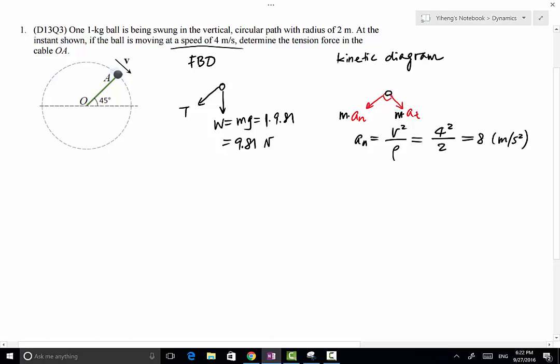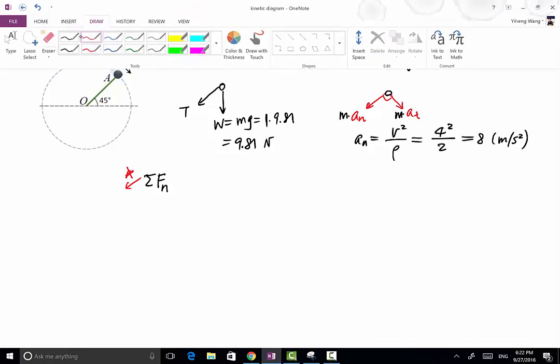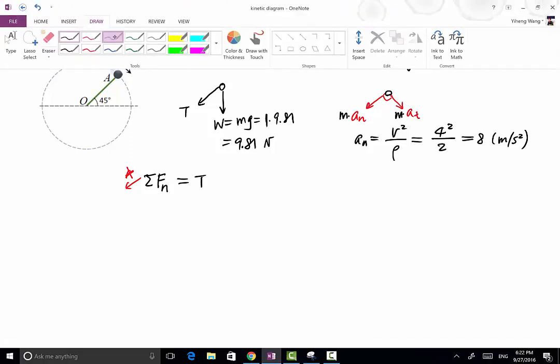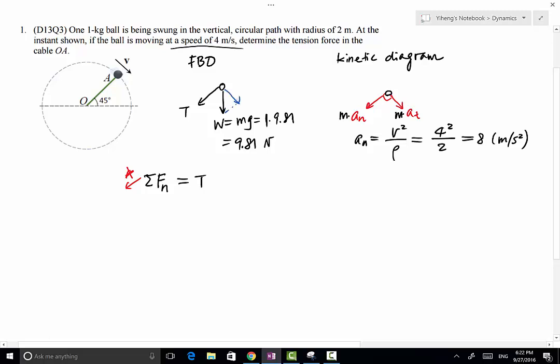So now we are ready to write our Newton's second law equations of motion. We resolve our force into the tangential and normal direction. So along the normal direction, remember that it is along this direction, positive N direction. We have the tension force, T is along the normal direction. We also have a component of the weight force. So we can resolve the weight force into its components.